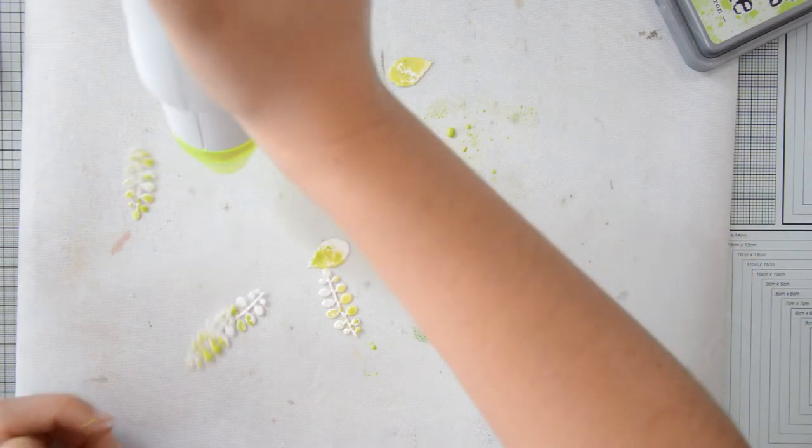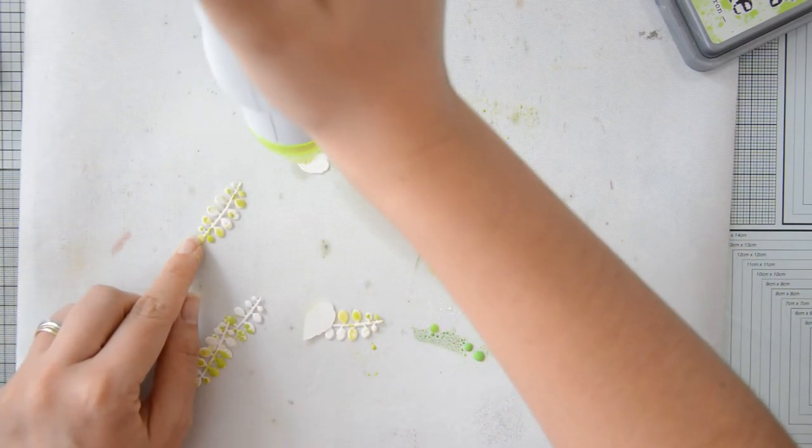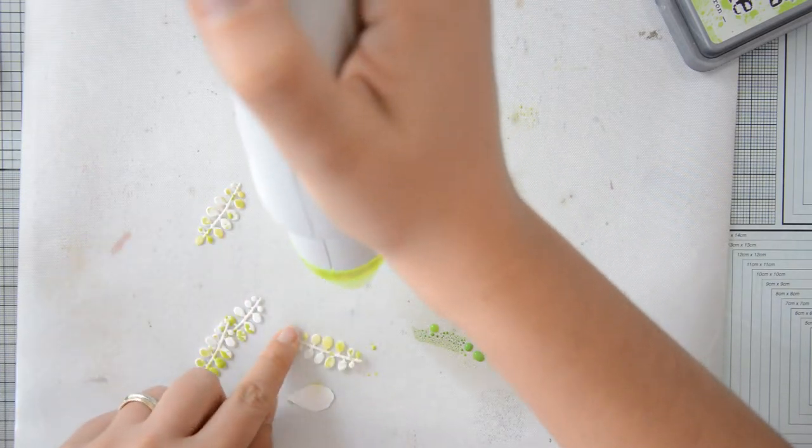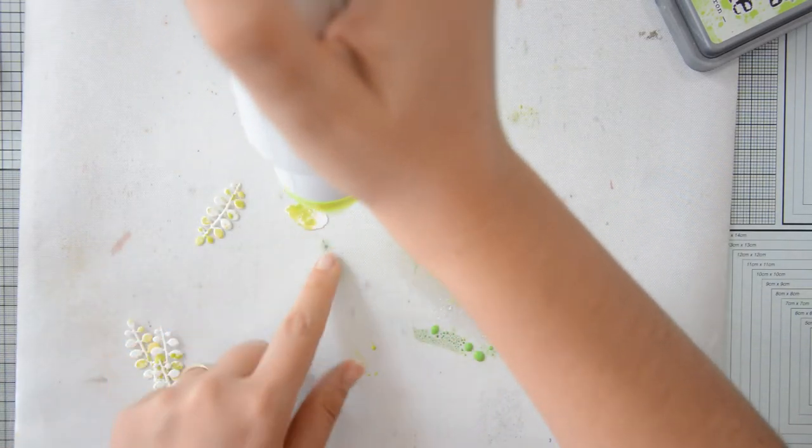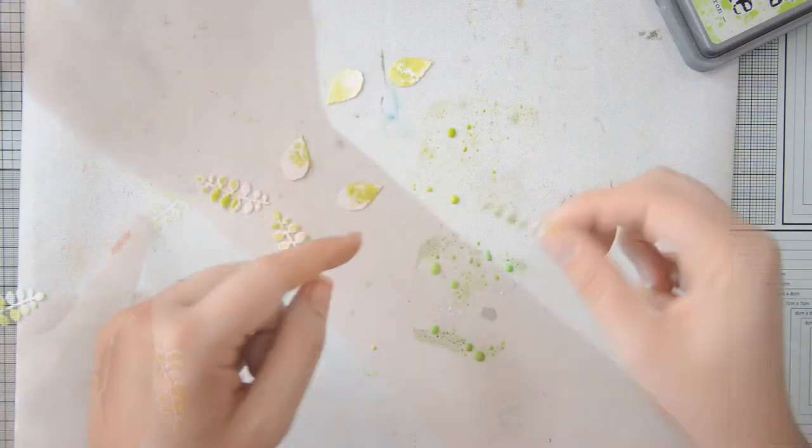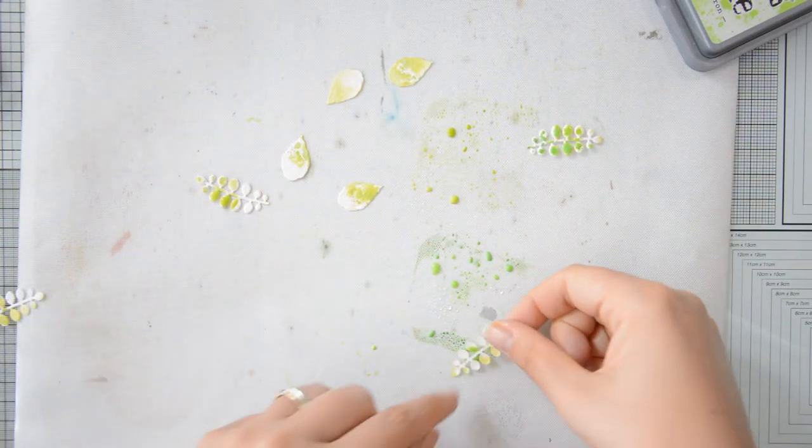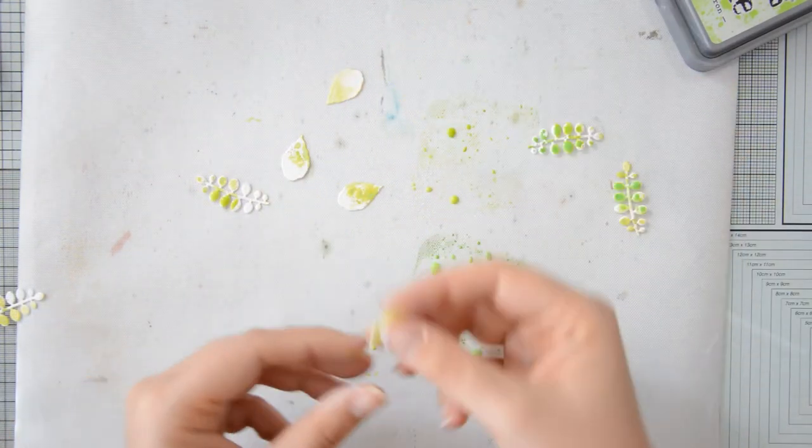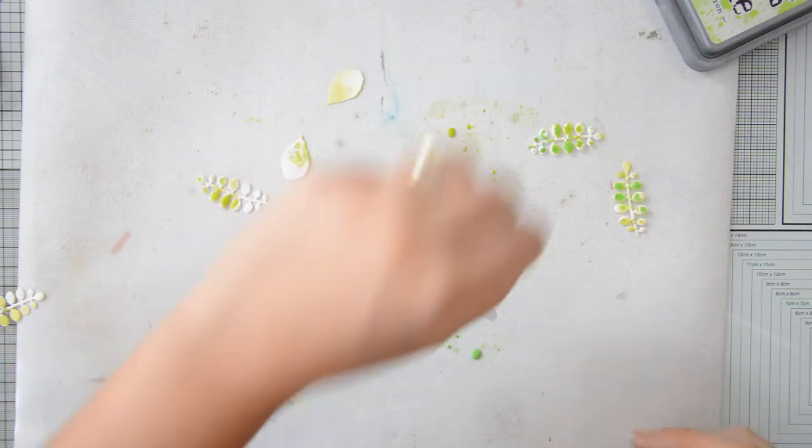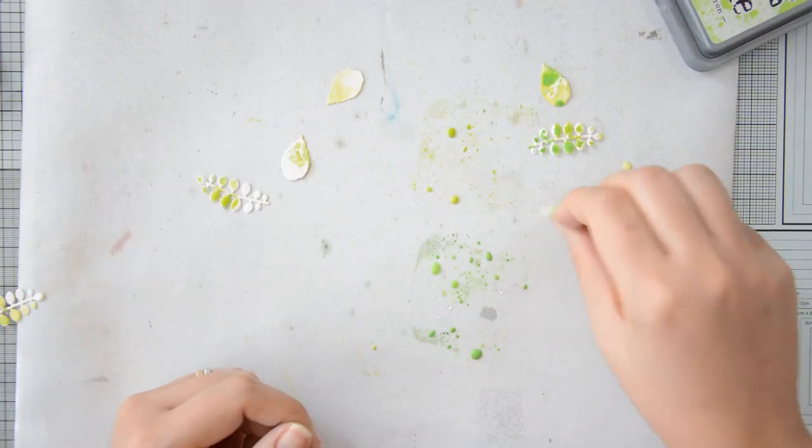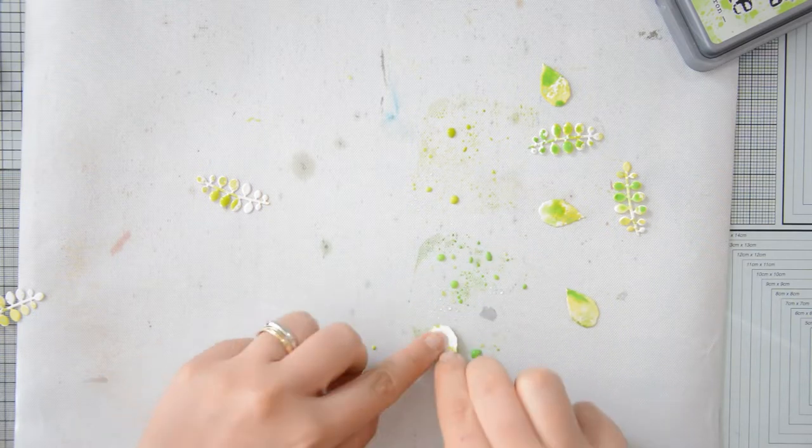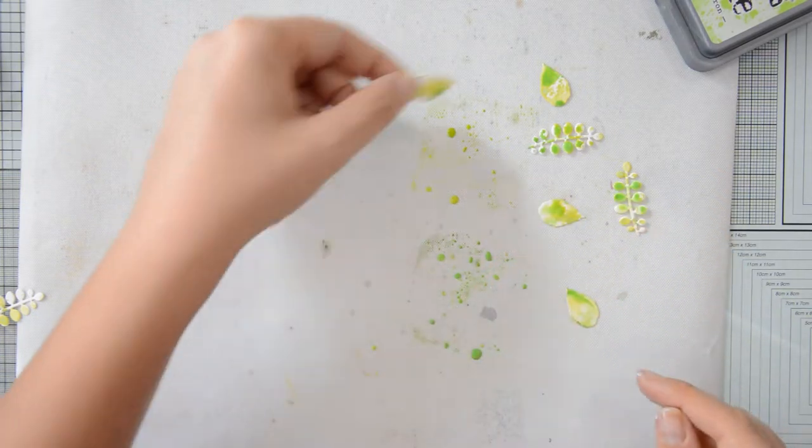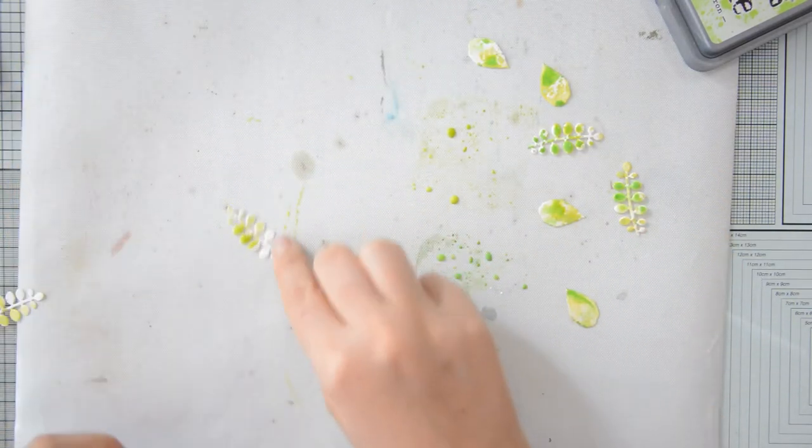I started by dipping them in the Twisted Citron. I am now drying this first layer with my heat tool and then I will dip them in the Mowed Lawn. And this is a really quick and easy way to add color and texture to your die cut. I have used it in a previous video where actually I have used Distress inks to add color to floral stamped images. And I will link to that video at the end of this one in case you'd like to have a look.